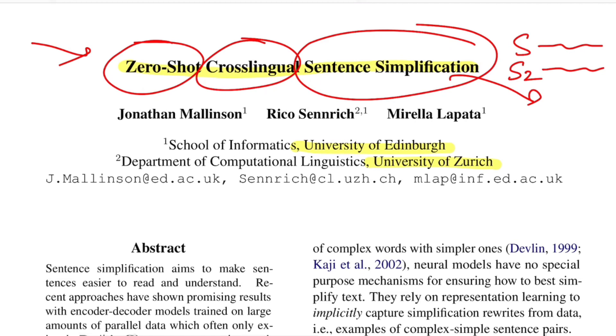For example, if you have a sentence S in Shakespearean language, you have another version S2 which is a more simplified, easy-to-read format of the same sentence. That is the task of sentence simplification.